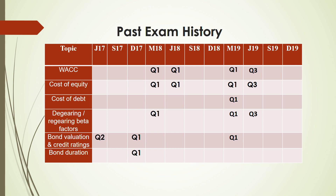Bond valuation and credit ratings are also covered here because a bond is a type of debt, so we use our understanding of cost of debt to find bond valuation, credit ratings, and bond duration. If you look at March 2019, cost of equity, cost of debt, re-gearing, de-gearing beta factors, and bond valuation and credit ratings all came as Question 1 in the same question. This shows you the importance of learning cost of capital — Question 1 is for 50 marks.